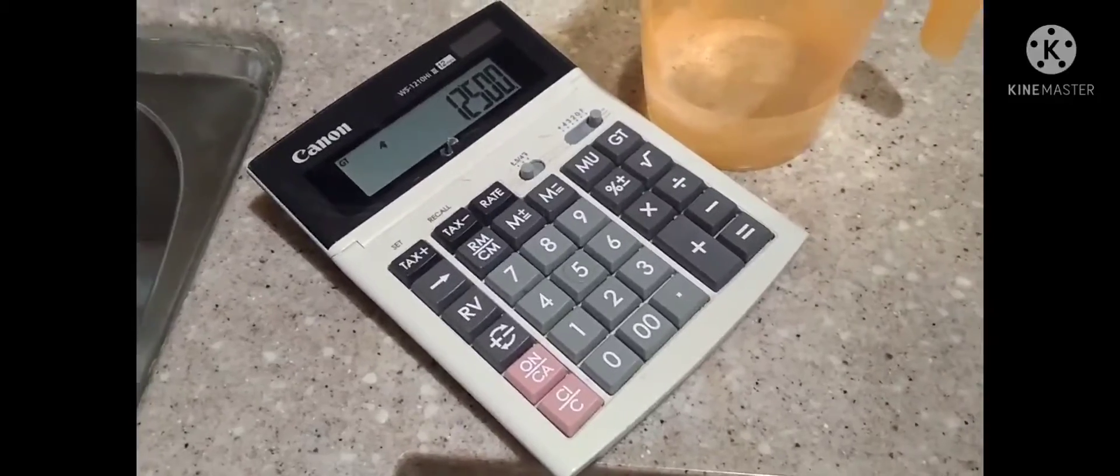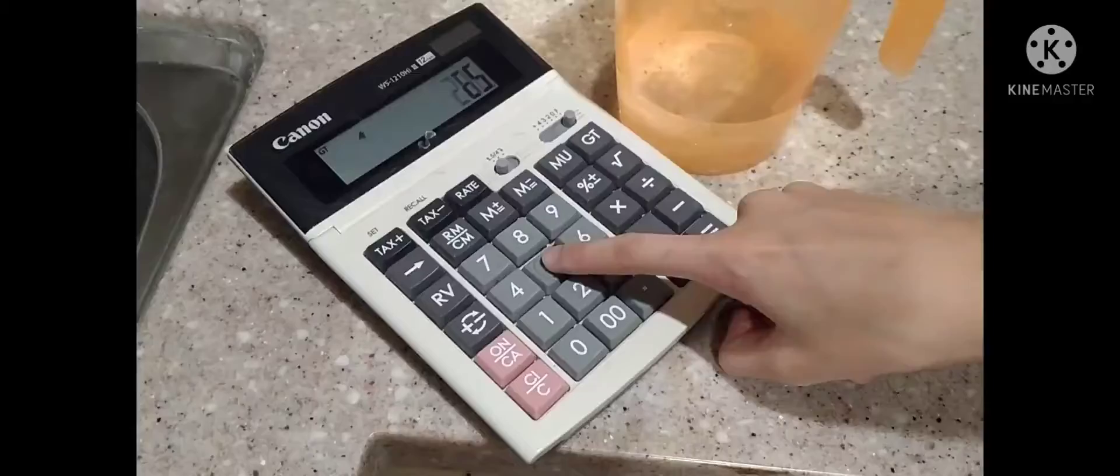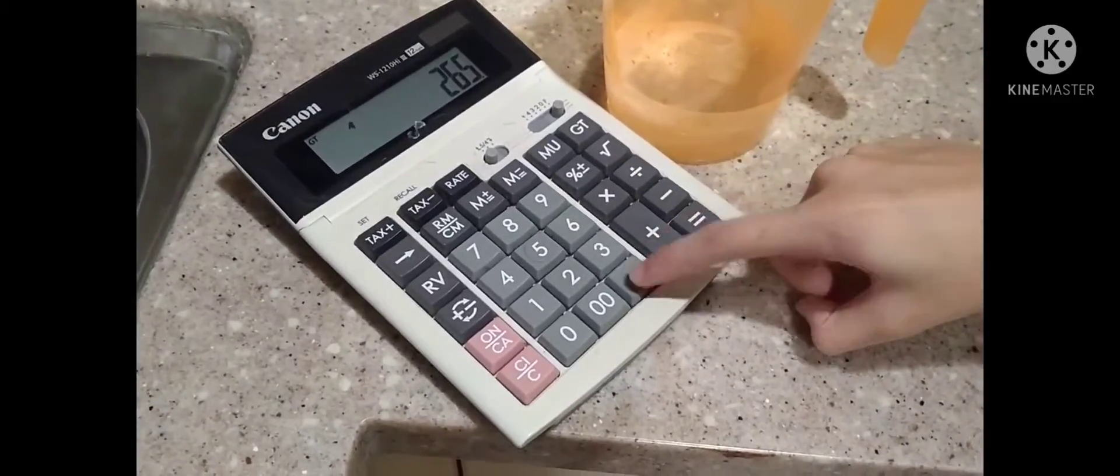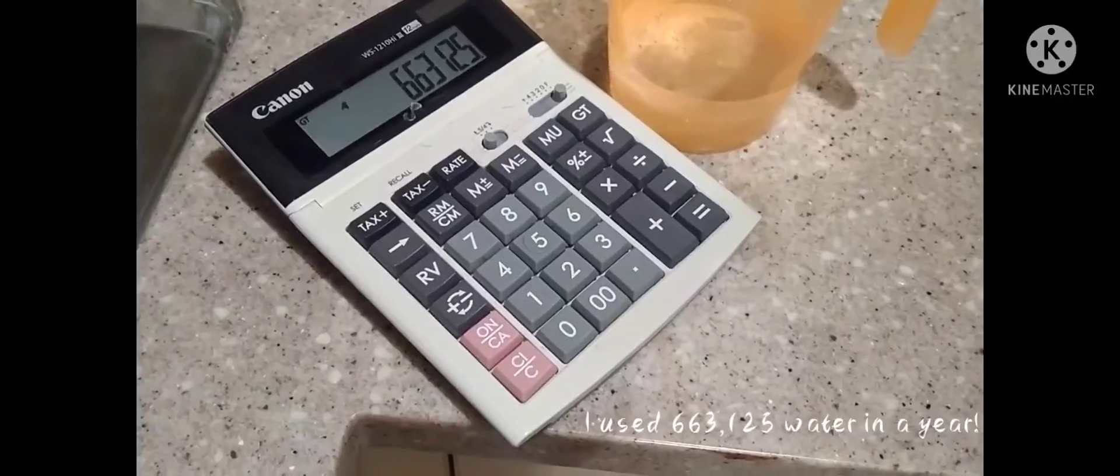To find out how much water I use in a year by showering, I will times 265.25, which equals 663.125.